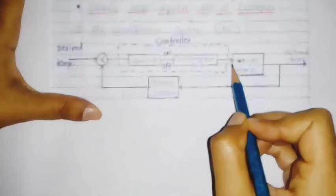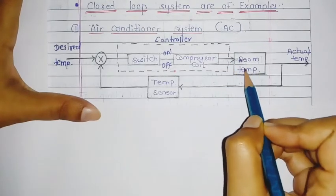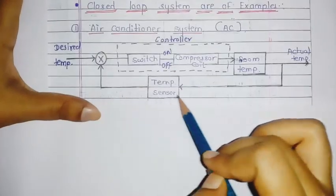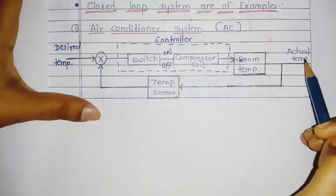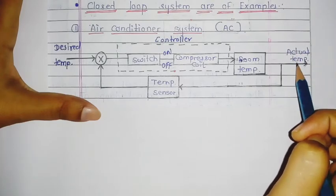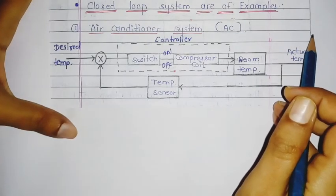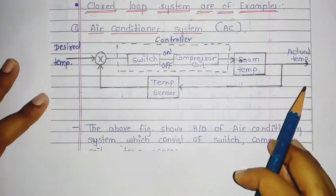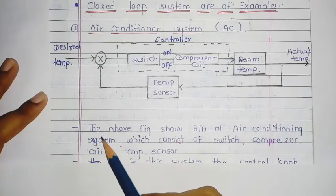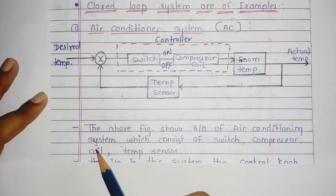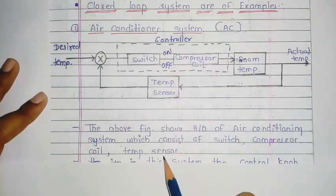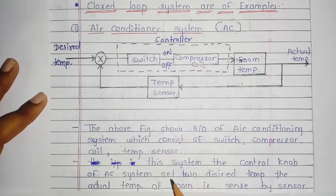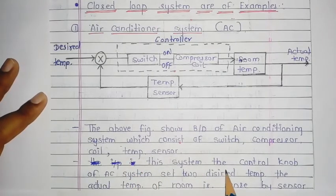The compressor coil will provide output to the room temperature. In this way the AC system works and gives the actual temperature. The above figure shows the block diagram of the air conditioning system, which consists of a switch, compressor coil, and temperature sensor.